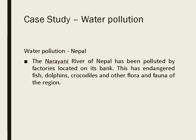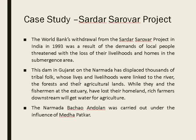Case study: Water pollution in Nepal — the Narayani river has been polluted by factories on its banks, endangering aquatic animals like dolphins and crocodiles. Another case study is the Sardar Sarovar project: the World Bank withdrew its funds because local people were threatened with loss of livelihood and homes in the submergence area. This dam on the Narmada in Gujarat displaced thousands of people, leading to the Narmada Bachao Andolan led by activist Medha Patkar.